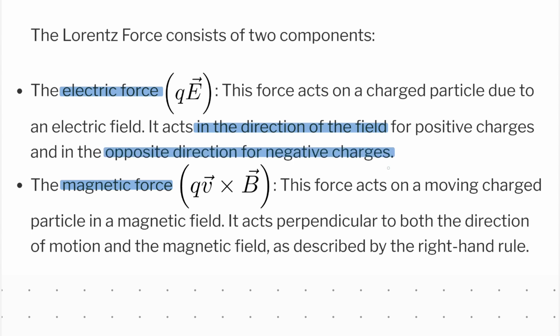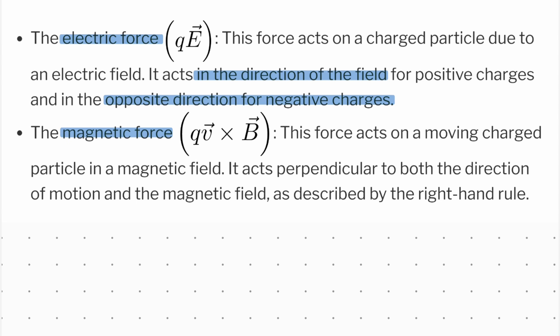The magnetic force is qv cross B, where v is the velocity vector and B is the magnetic field vector. Because it's a cross product, the magnetic force is perpendicular to the direction of motion and also perpendicular to the magnetic field. We use the right-hand rule to get the correct direction, but we'll leave that for another time.